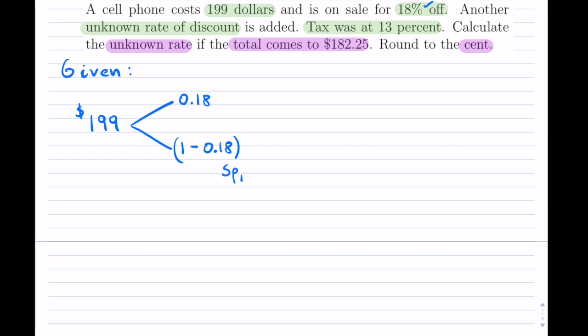Now they say that there's another discount. And although they do mention it's added, you never add discounts together. You apply them one at a time. So since we've applied this first discount, now we're going to apply the second one.